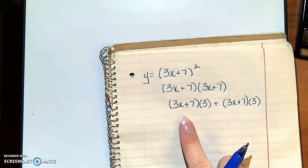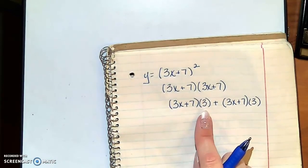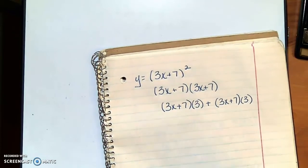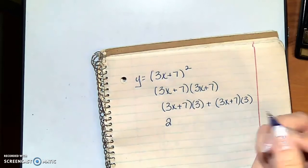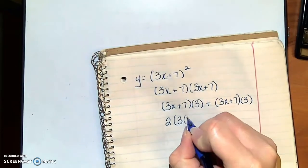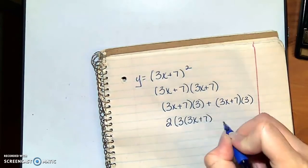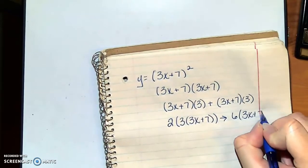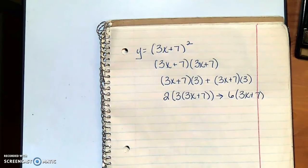So then the question is, how many 3x plus 7 times 3s do I have? I have this one and I have this one, which means I have two 3x plus 7s, which means really I've got a 6 times 3x plus 7. So that's way number one.